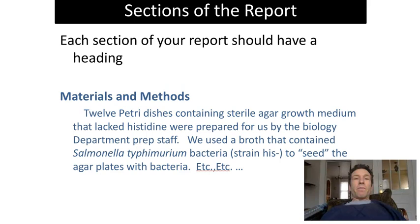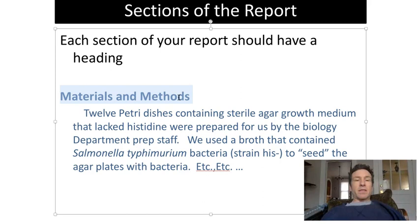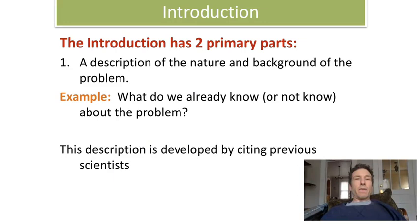We are going to go over the general setup of a lab report now. In a lab report, there are several sections. Each section needs to have its own heading. For example, when you wrote your materials and methods section, you had a heading that said either 'methods' or 'materials and methods.' That will be true for the other sections you're doing this time as well.